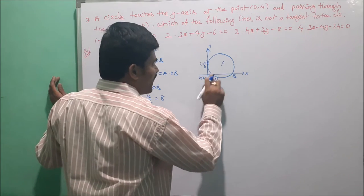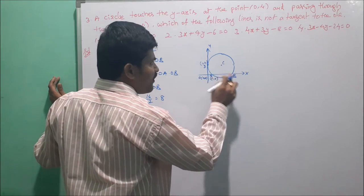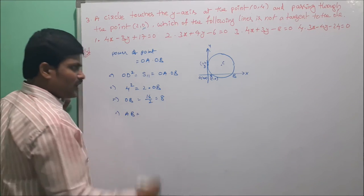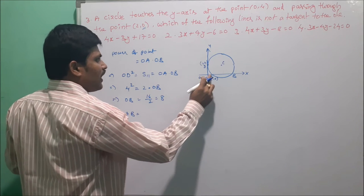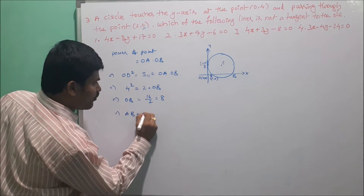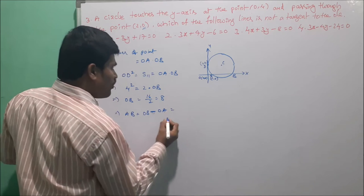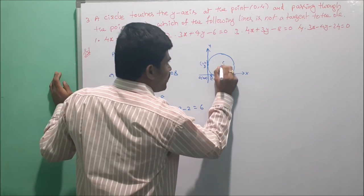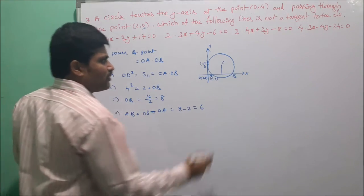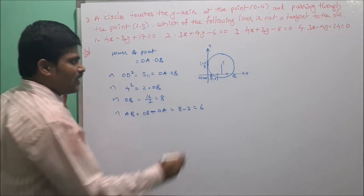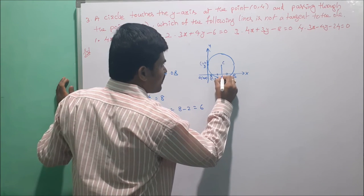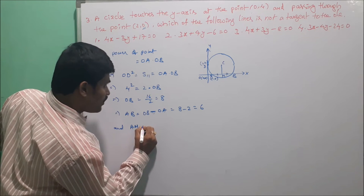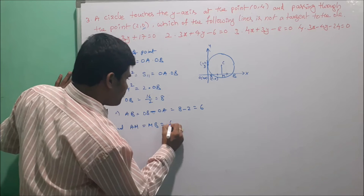We draw a perpendicular from the center C to the chord AB. This perpendicular bisects AB, so AM = MB = 6/2 = 3 units. Also, CM is perpendicular to AB, so this line bisects the chord. The distance CM is parallel to the y-axis and equals 4 units.